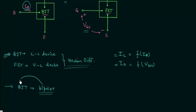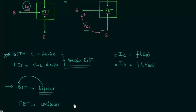The next major difference is that BJT is a bipolar junction transistor — the name itself denotes this — but FET is a unipolar junction transistor. In a BJT, current conduction is due to both types of charge carriers: electrons and holes. But in a FET, current conduction is due to either one of the charge carriers — either electrons or holes.